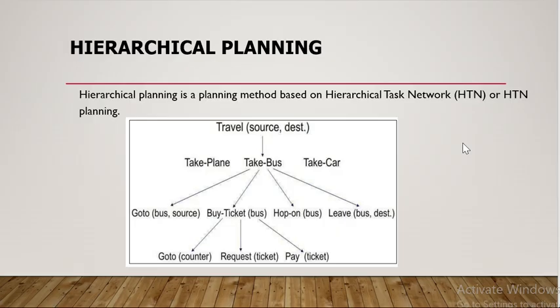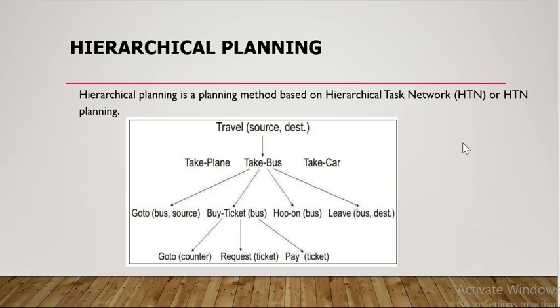HTN is a planning-based method. What you do here is set an action at the top level, and then give the decomposition from higher level to a partial set of lower levels. Simply put, look at the example given here: travel. Travel is the picked action — travelling from one source to a destination, where source is the starting point and destination is your goal state.